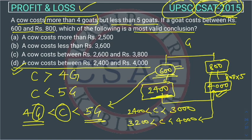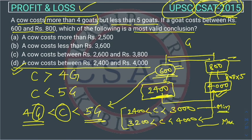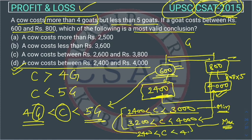This gives us the minimum and maximum price of goat. There can be goats priced at 600 and others at 800, so the goat price ranges between 600 and 800. From these two equations, the minimum price of cow is 2400 and the maximum price of cow is less than 4000. Either way you solve it, the answer remains the same.